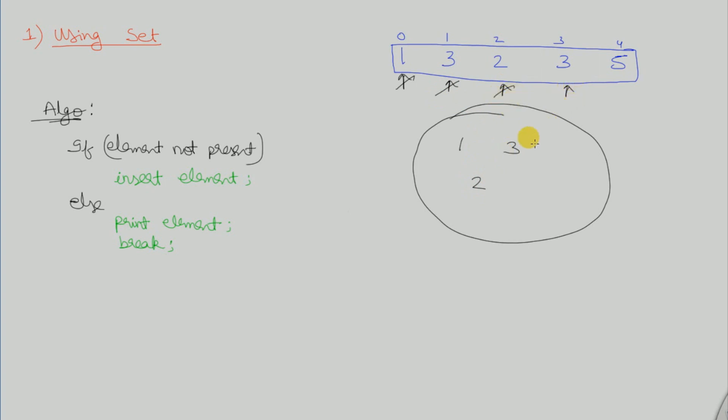When we search for 3 in the set, it is matching. So this is the duplicate element. We print the element and break out of the loop.